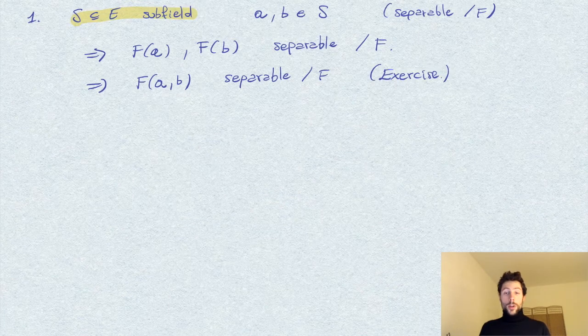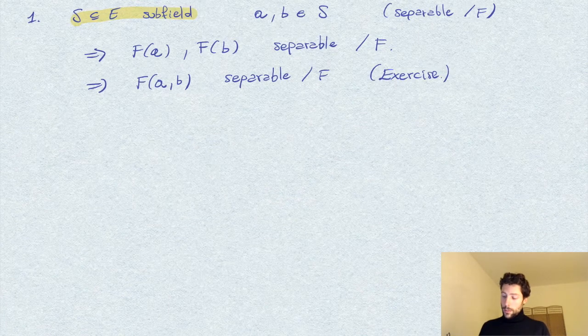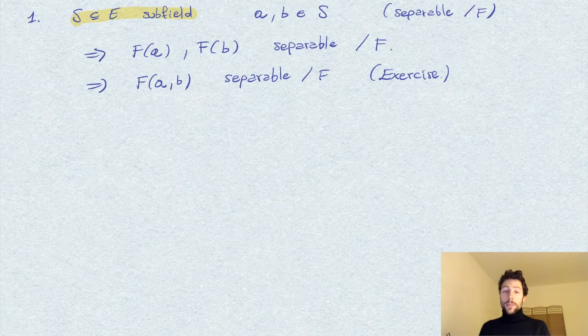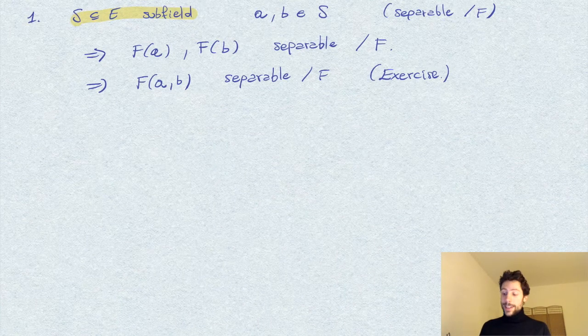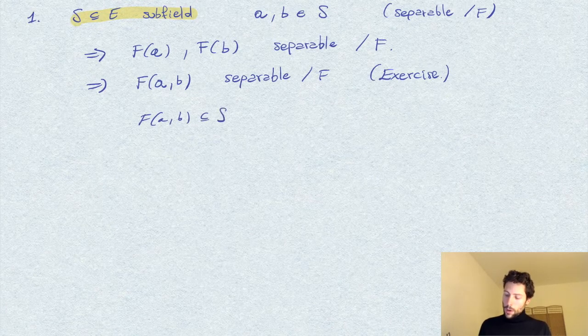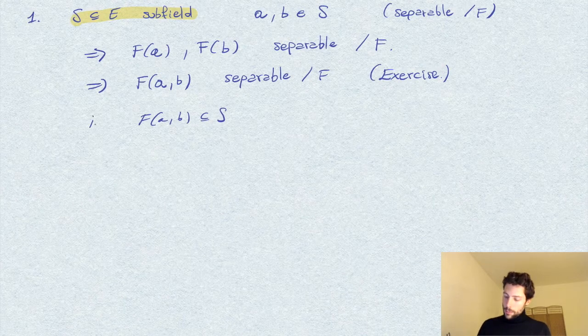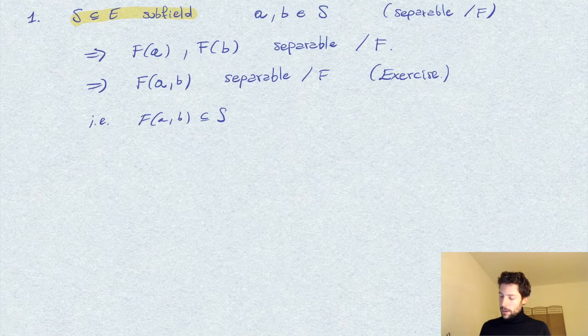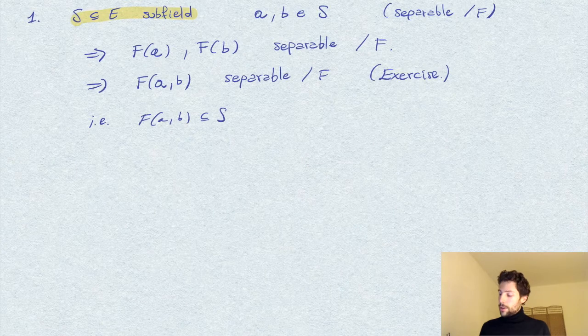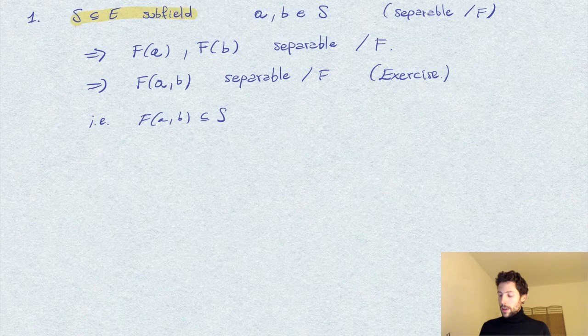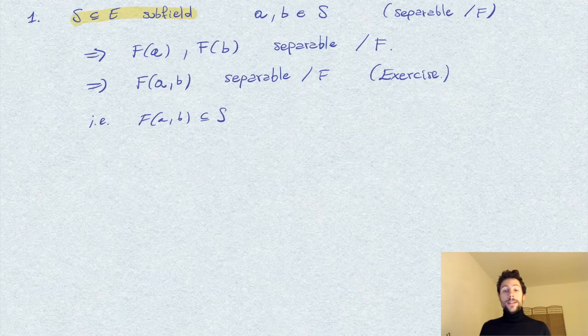And I will leave this as an exercise for you. So, in particular, once we have this, then clearly, so what we have proved is that F extended by A and B sits inside S. So it's a subfield of S. And therefore, S contains the field generated by A and B, or maybe better say, all what we care of, the products, the inverses, some differences, and so on. So it means that S is a field itself.